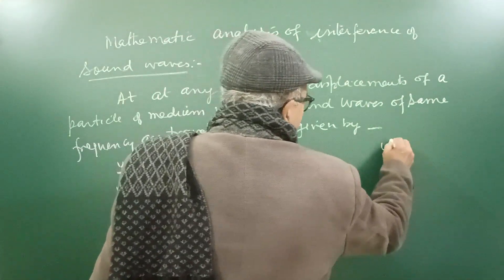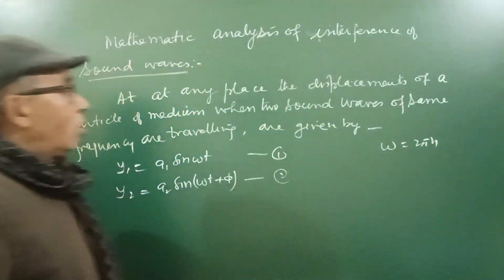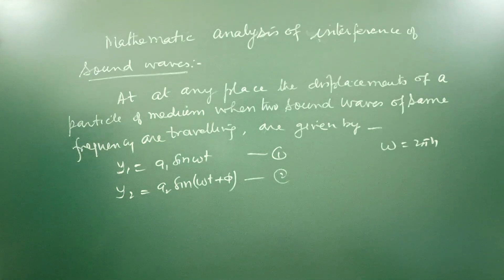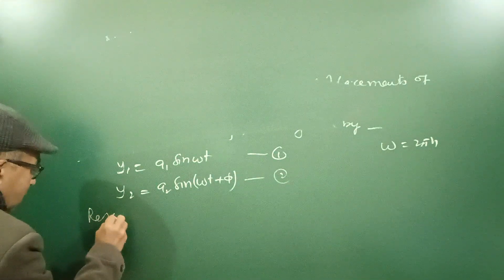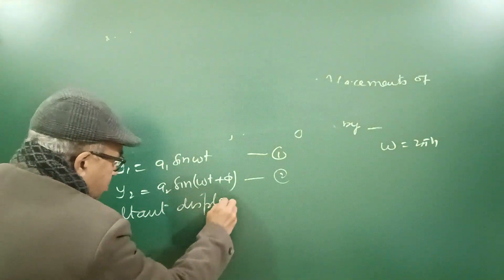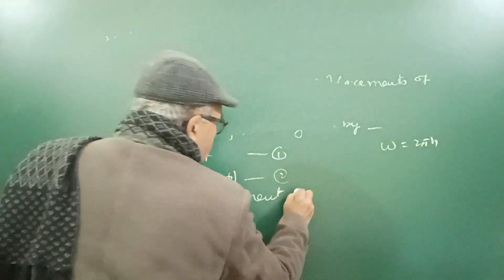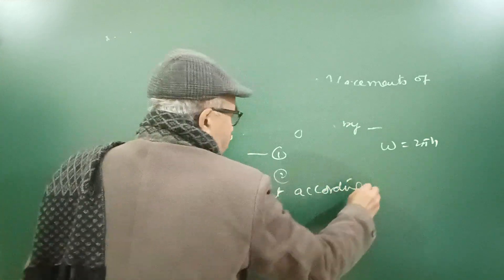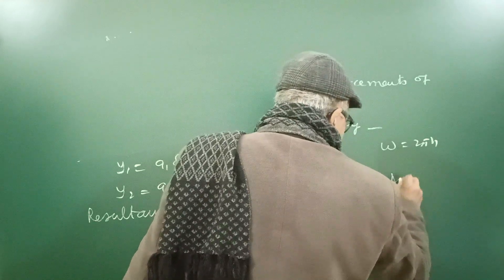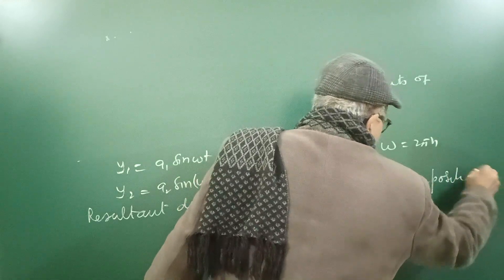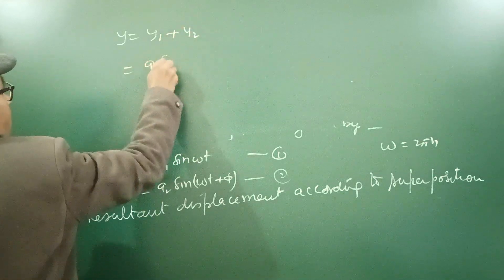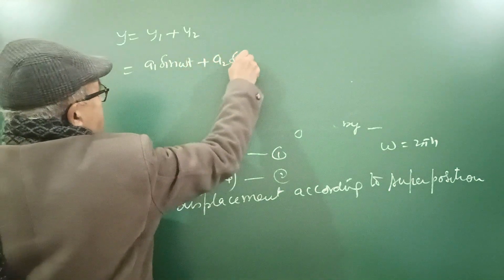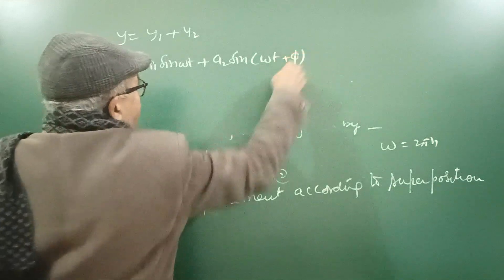So interference is superposition of two waves of the same frequency. The resultant displacement y = y1 + y2, which equals a1 sin(ωt) + a2 sin(ωt + φ). Here you need trigonometry. Using the formula for sin(ωt + φ), we expand: a2 sin(ωt + φ) = a2 cos(φ) sin(ωt) + a2 sin(φ) cos(ωt).